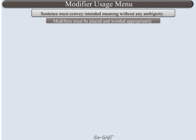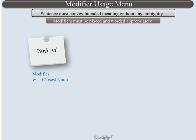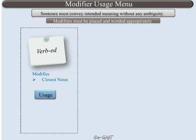Typically, a modifier must be placed close to the entity that it modifies. This is always true for all VERB-ED modifiers. Even though this concept is not really new to you, for the sake of comparison with VERB-ING modifiers, we will review a few examples to note certain correct and incorrect usages of VERB-ED modifiers.